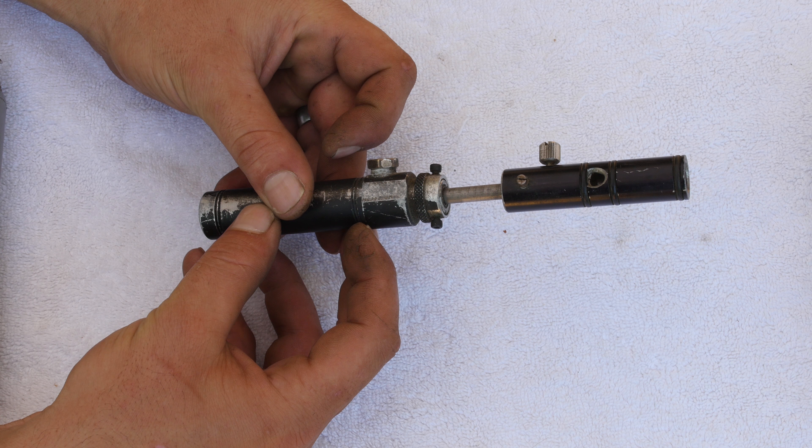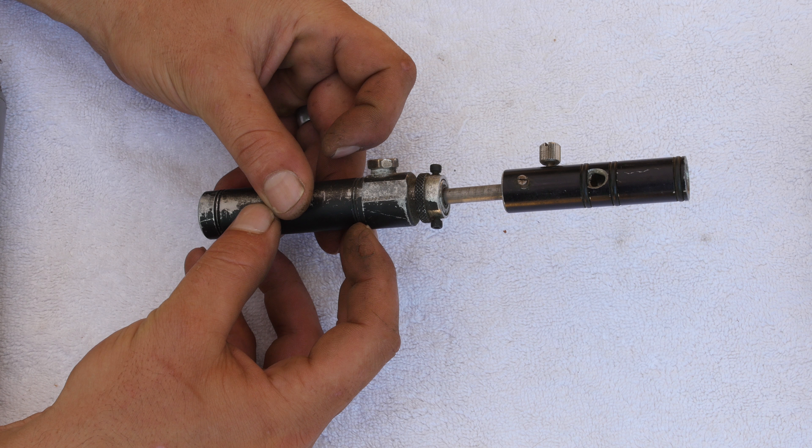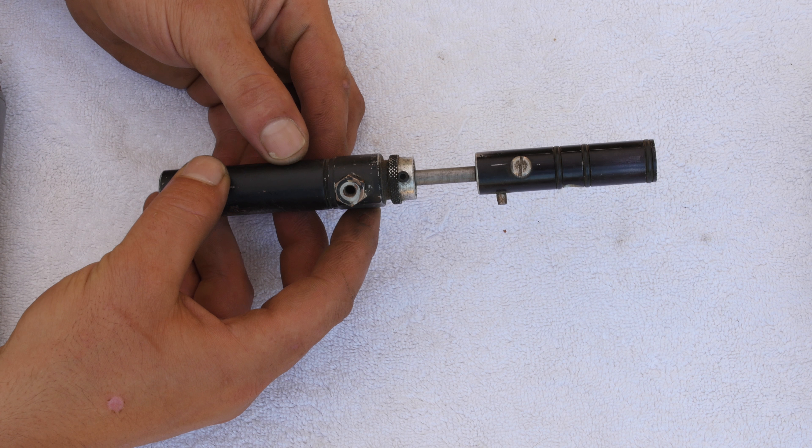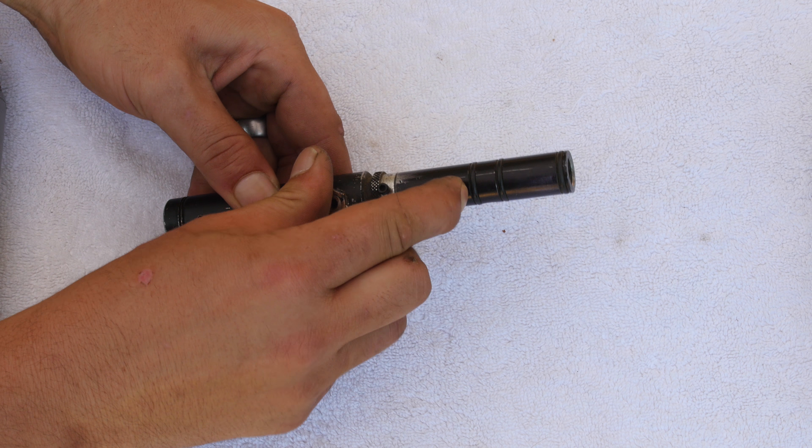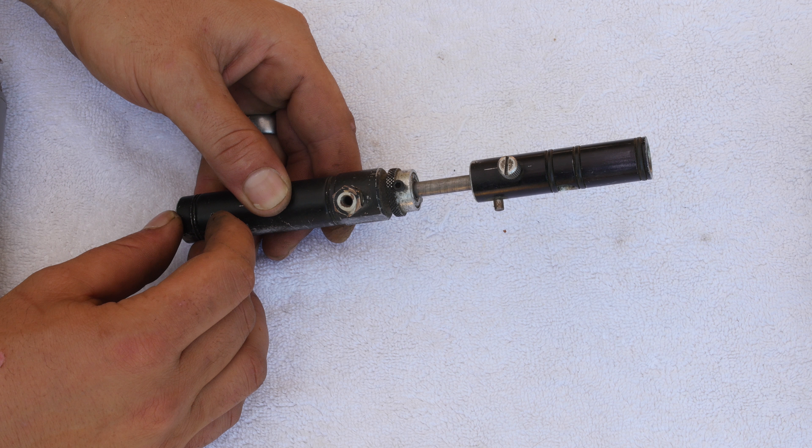Then if you had a jam or if you just needed to cock the gun, you would grab that little notch. And we're looking at it upside down right now because your lug would go down into your hammer. And you would grab that notch on the side of it and you would pull it back, and that would cock or get rid of a jam.